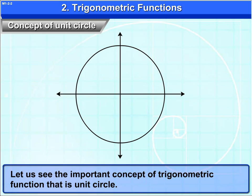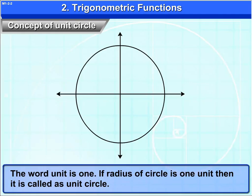This is a Unit Circle. You know why this is called a Unit Circle? The word unit means one. If radius of circle is one unit, then it is called as Unit Circle.